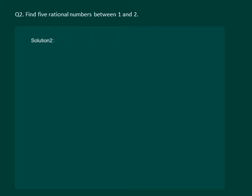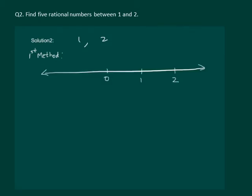Let us read the question: find five rational numbers between 1 and 2. There are two ways of doing this question. Let us discuss the first method, in which we consider a number line. We have to divide the interval between 1 and 2 into six equal parts.